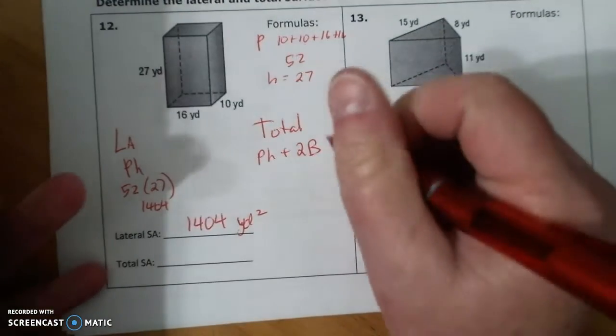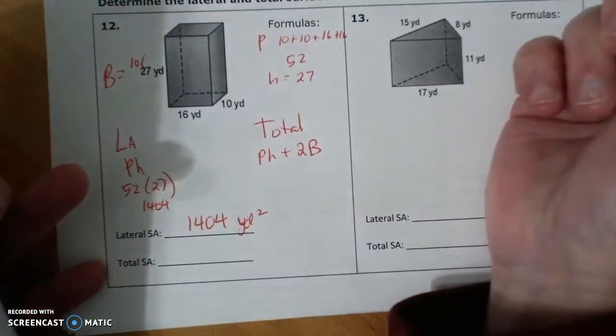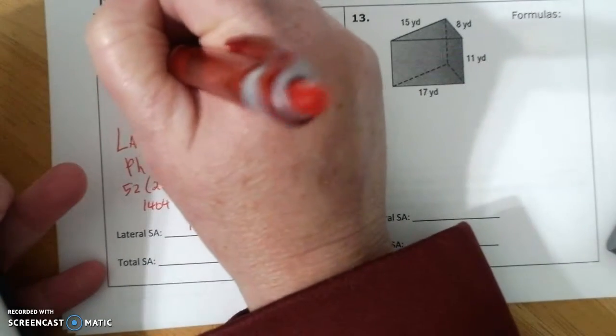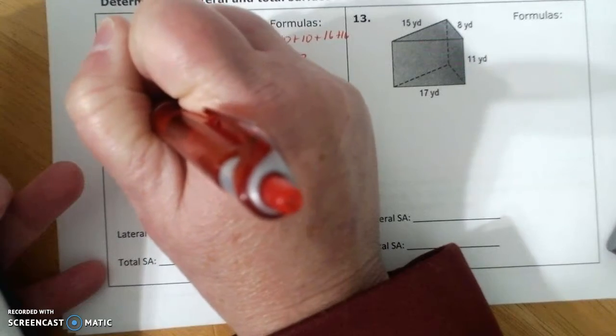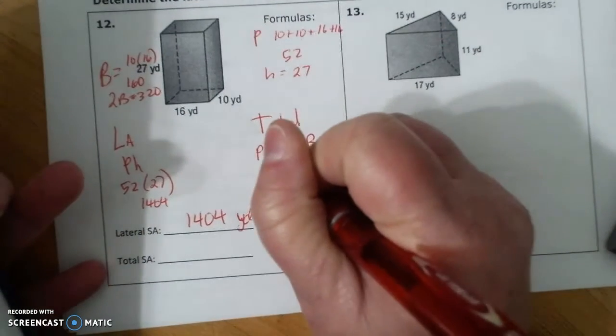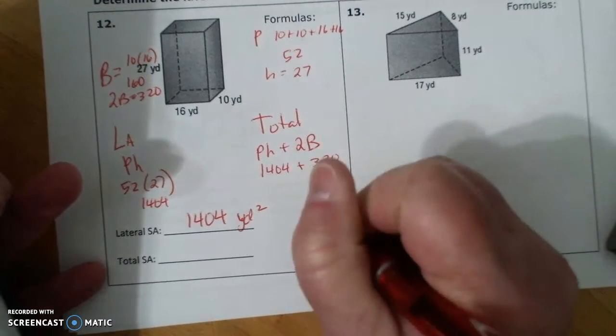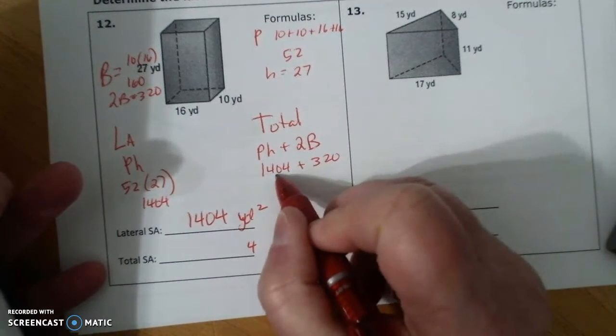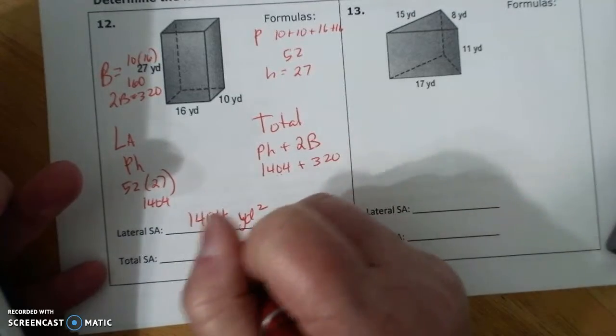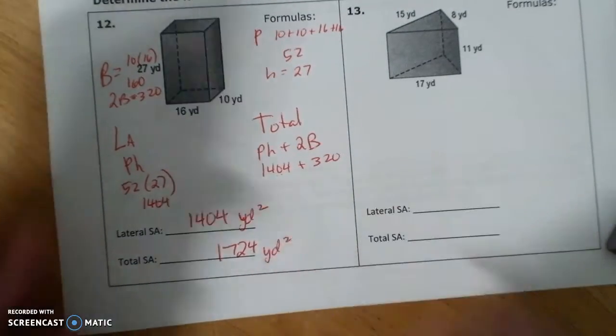And then big B. Big B is 10 times 16, which is 160. And 2b is 320. So this is 1404 plus 320, which is 1724 yards squared.